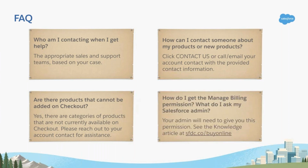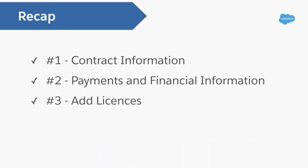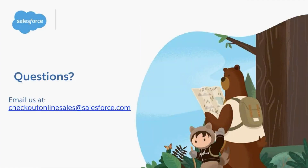How do I get the manage billing permission? Your admin needs to add this permission to your profile or permission set. See the knowledge article at sfdc.co/buyonline. To recap, the top reasons to use Salesforce Checkout are: one, to get information about your contract, like renewal dates; two, pay invoices and access statements, invoices, payment records, and other financial information; and three, as your business grows, add licenses and other add-on Salesforce products. Thank you very much. If you have any questions about Checkout, please email us at checkoutonlinesales@salesforce.com.